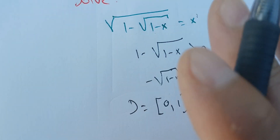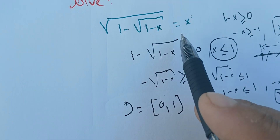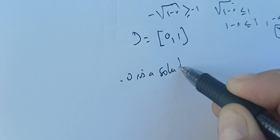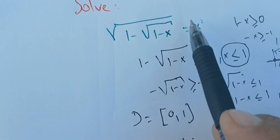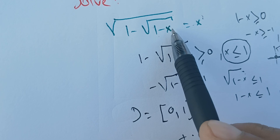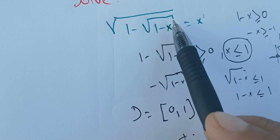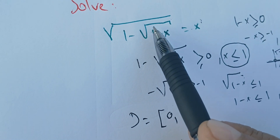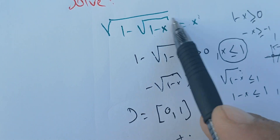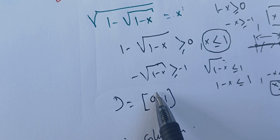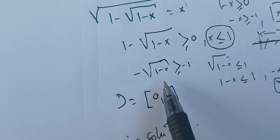We know two things. First, that zero is a solution. If we plug x = 0, we get zero on the right side, and √(1 − 0) = √1 = 1, then 1 − 1 = 0, and √0 = 0. Therefore, zero satisfies the equation and is in the domain of definition, so zero is a solution.